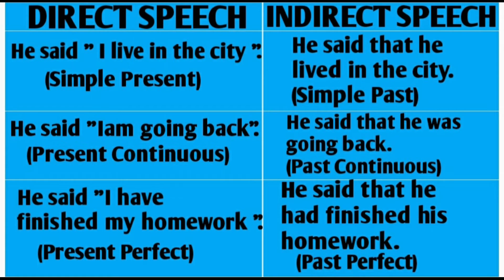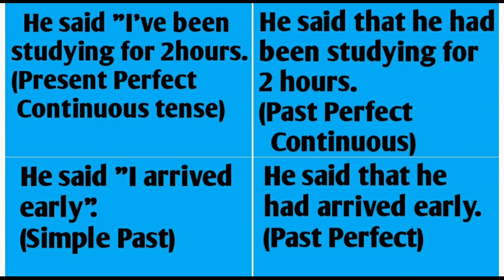He said, 'I have finished my homework.' This is in present perfect tense. When we change this into indirect speech, it becomes past perfect: he said that he had finished his homework. He said, 'I have been studying for two hours.' This is present perfect continuous tense. When we change this into indirect speech, it becomes past perfect continuous: he said that he had been studying for two hours.